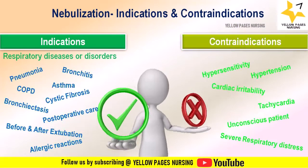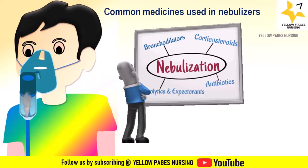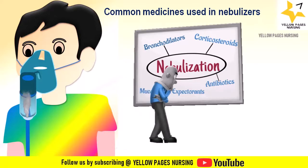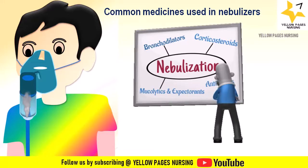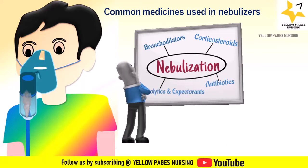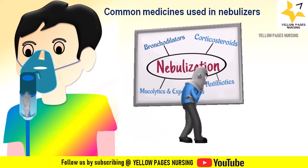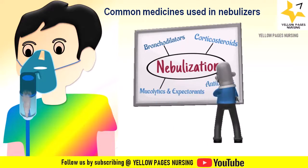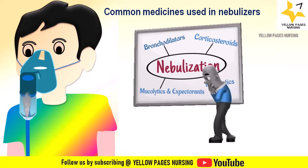Common medicines used in nebulizers: first are bronchodilators, for example albuterol (salbutamol), levalbuterol, formoterol, and salmeterol. Bronchodilators are used to relieve bronchoconstriction. Next are corticosteroids, for example budesonide and beclomethasone dipropionate, which are used to reduce inflammation of the upper airway.